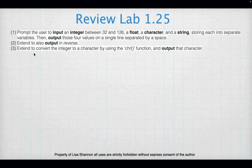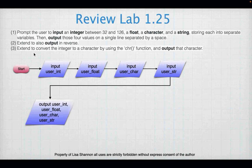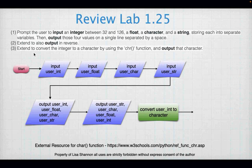In the flowchart: input age, weight, heart_rate, and time. Convert everything to integer, calculate calories, output that, and end. That's lab 1.24 — make sure your variables are named the same as the variables in the calculation for calories. Last lab for the night: prompt the user to input an integer between 32 and 126, a float, a character, and a string, storing each into separate variables. Output those four values on a single line separated by space — this is where you need that comma and end equal space. Also output in reverse order. Then convert the integer to a character using the chr function — just like using the int or string function. Input all your stuff, convert the integer, output it, output in the other order, then convert user_int to character, output the character, and done.